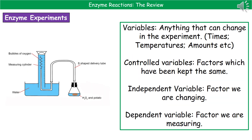A typical experiment you may have done in class is to observe the breakdown of hydrogen peroxide using potato — or liver, if your teacher preferred to work with organs. On the left-hand side there is a diagram of the equipment setup. Because gases are produced as products, we can collect them in a measuring cylinder, and the amount of gas produced gives us an idea of the rate of reaction.